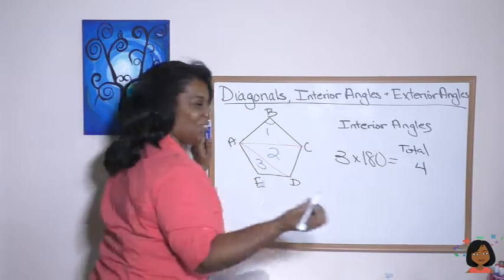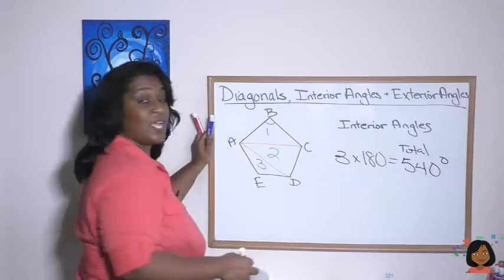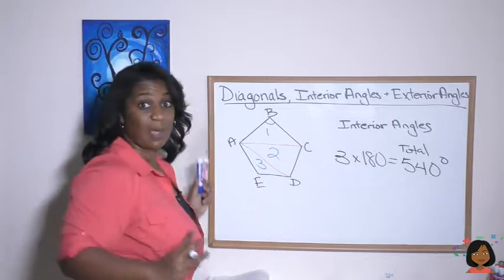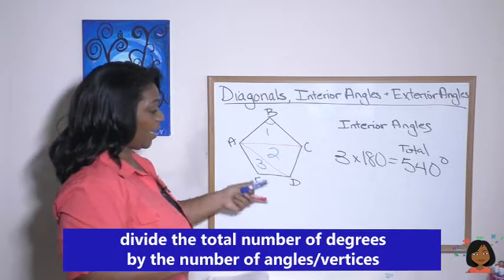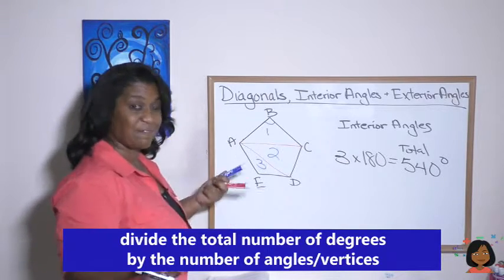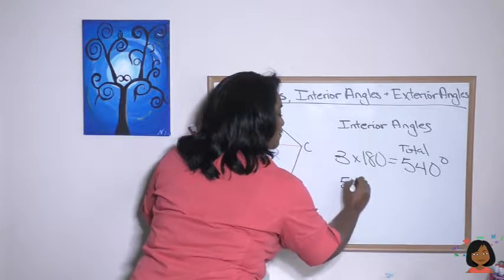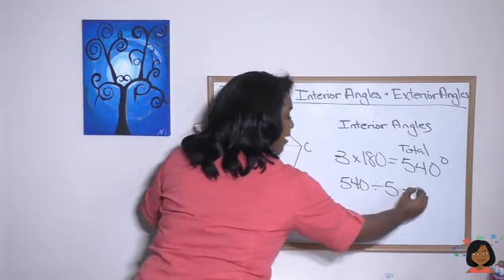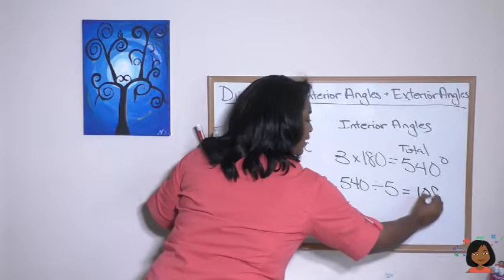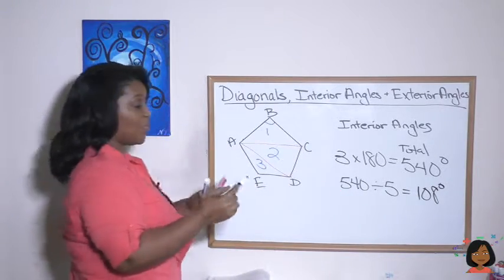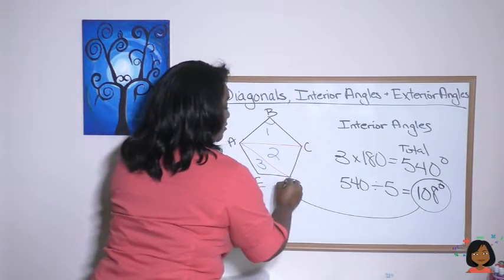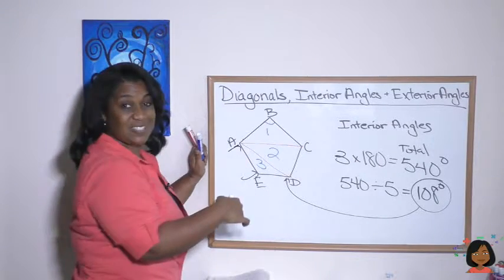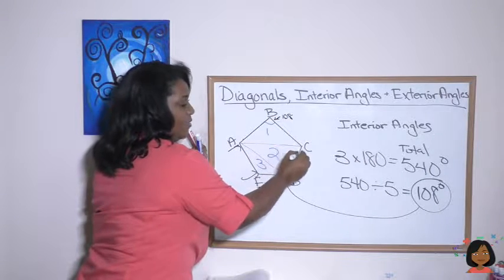Three times 180 gives us 540 total degrees in the pentagon. But that's the total — I want to know each angle. A pentagon has five angles, so I divide 540 by five, which gives 108 degrees. So each interior angle of a regular pentagon is 108 degrees — and we can see it's an obtuse angle.